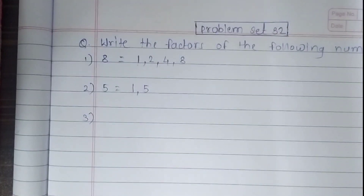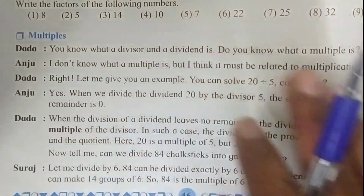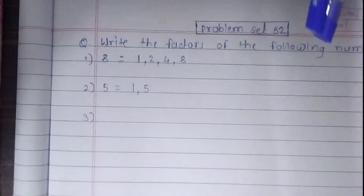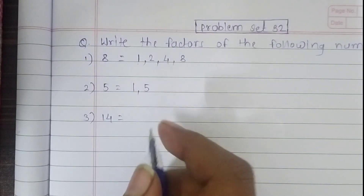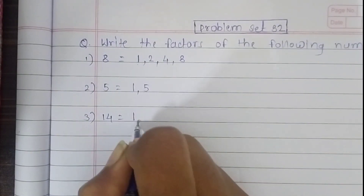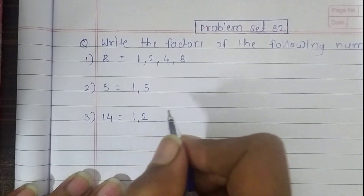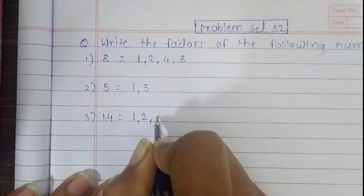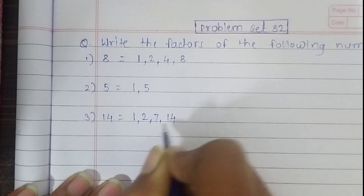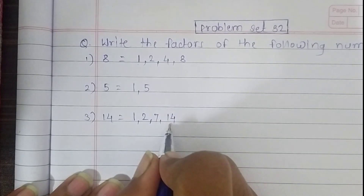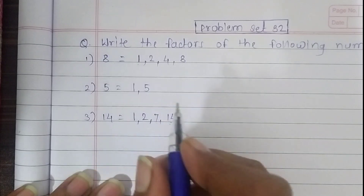The third question is 14. Let's write the factors of 14 here. The first factor of 14 is 1. The second factor is 2 — 14 comes in the 2 times table. The third factor is 7, and the fourth factor is 14. So 1, 2, 7, and 14 are the factors of 14.